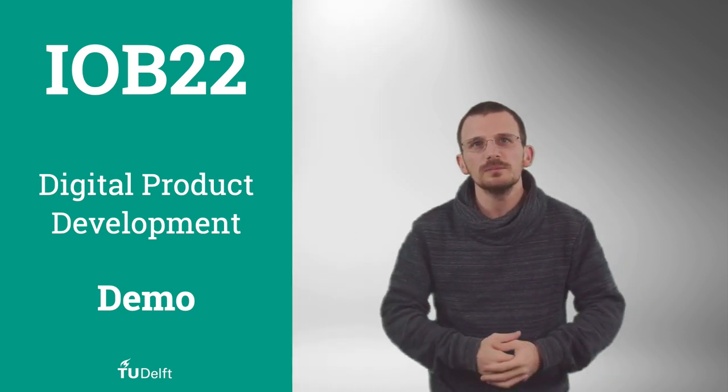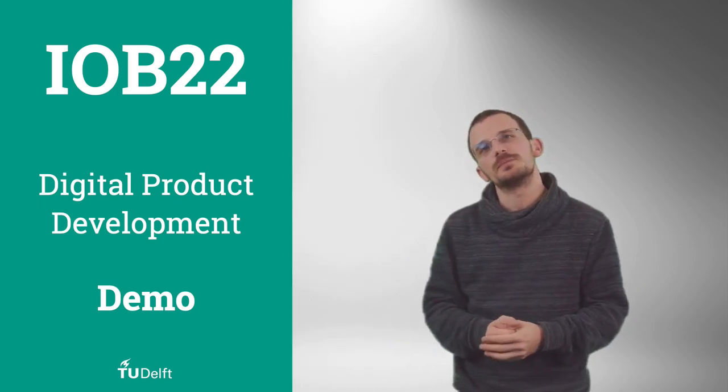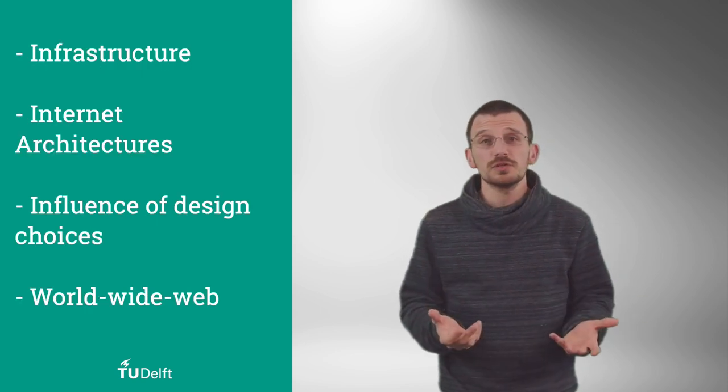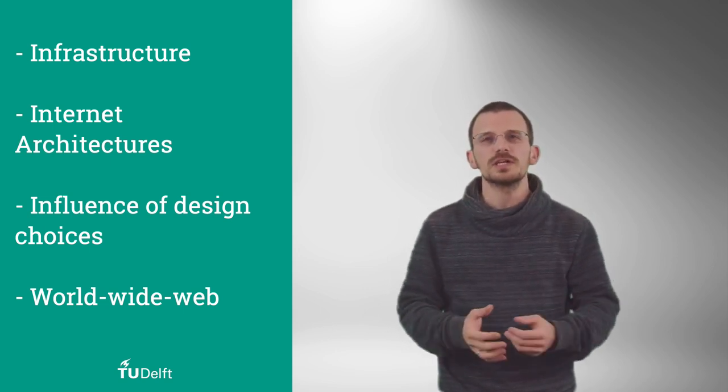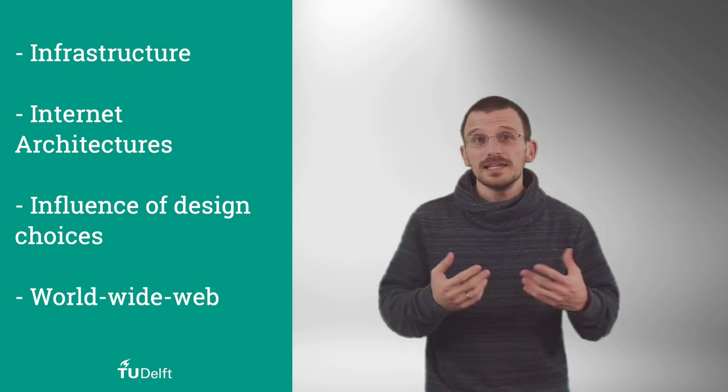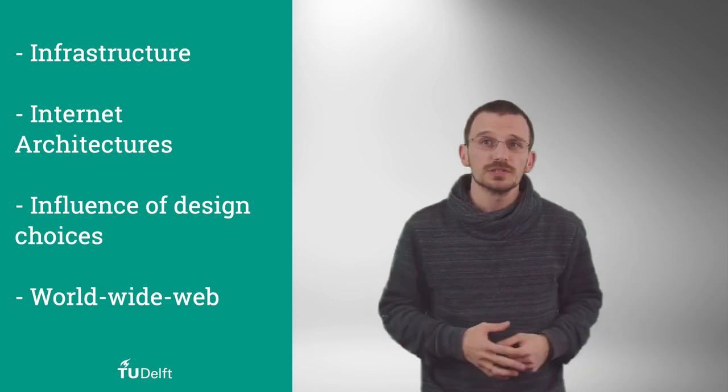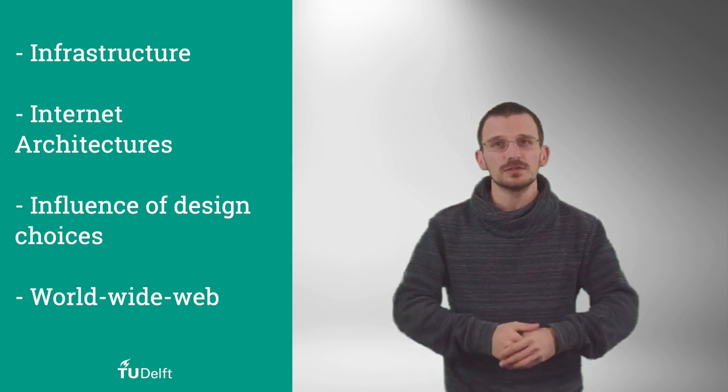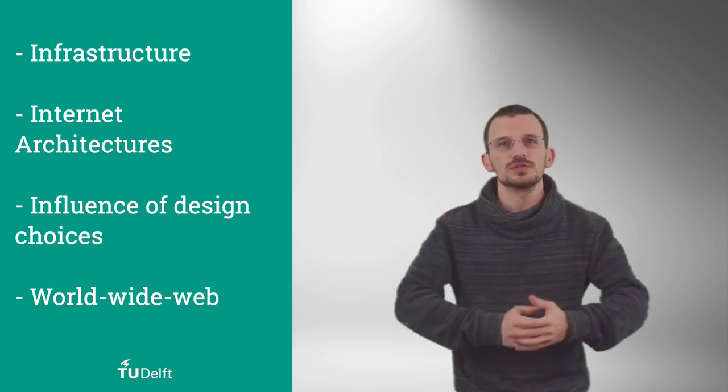Hello and welcome to this week's set of short videos on digital product development. Today we're going to talk through what is infrastructure, how do software functionalities and codes run on different locations and other computers, what are internet architectures for connected products, and perhaps most important of all, we'll be thinking about how the design choices of these architectures impact the qualities of the product service systems.